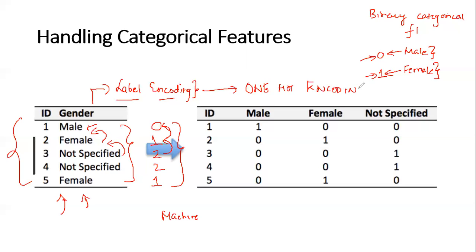One hot encoding applies a simple mechanism wherein, based on the number of categories present, it will divide those into that many columns. So here with male, female, and not specified, it gets converted into three columns. Wherever the value is male, that particular male column gets value 1 and remaining columns get zero. Similarly, whenever there is a female, the female column gets 1 and remaining get zeros. The machine learning algorithm will then be able to distinguish clearly because the column having the value 1 indicates that particular category.